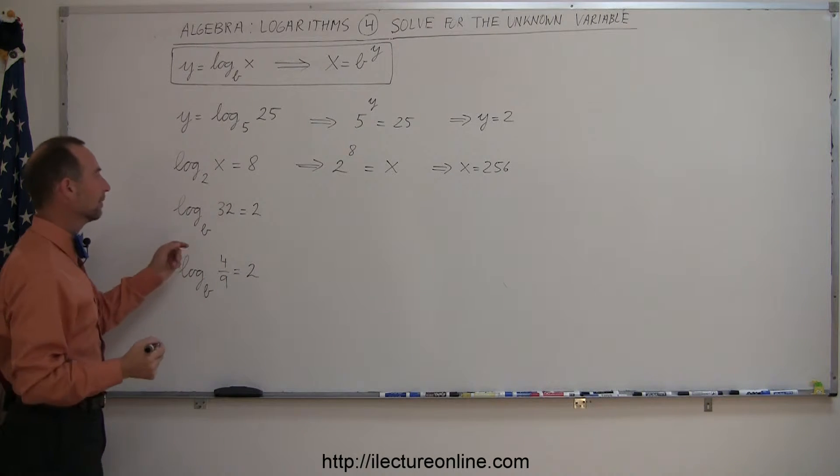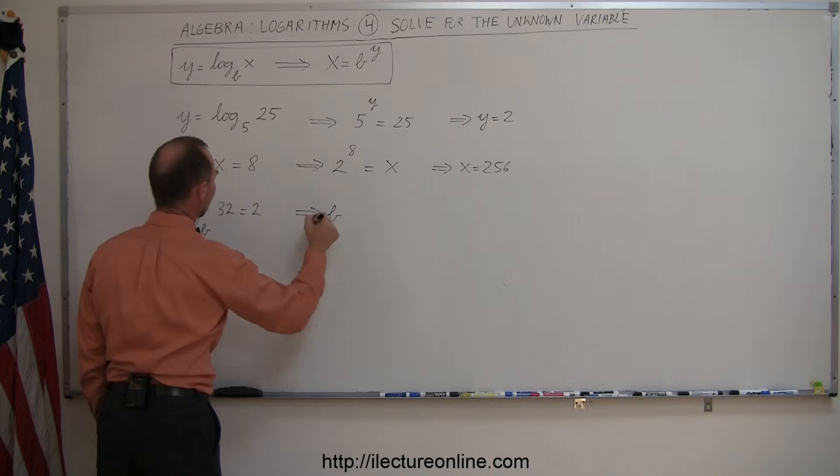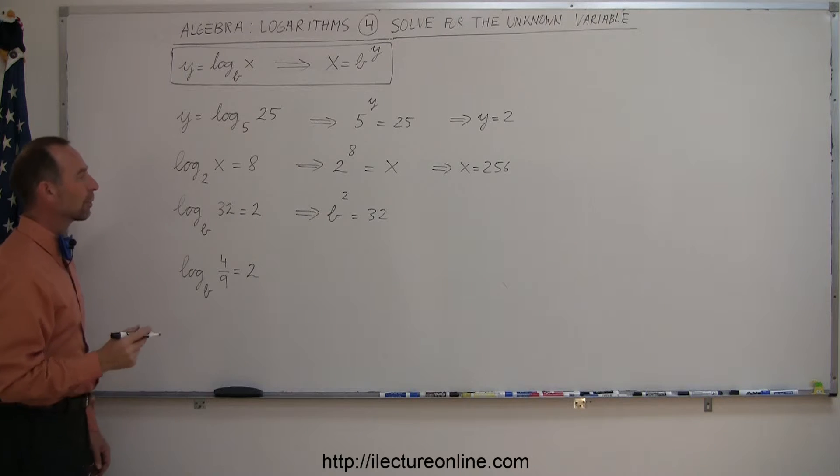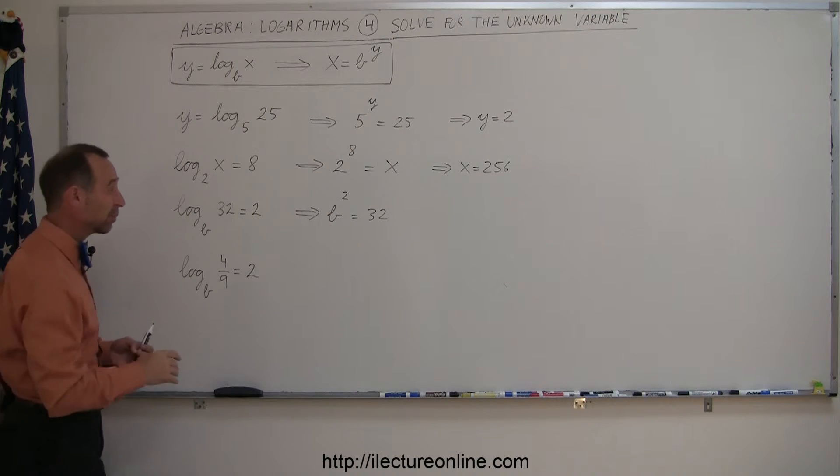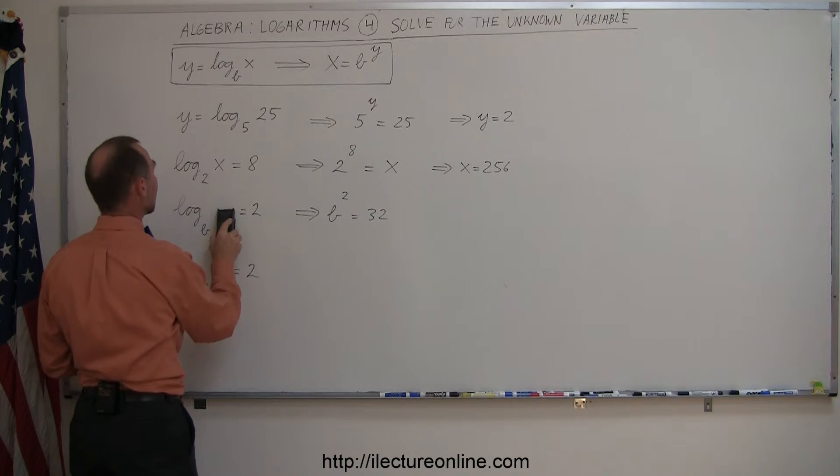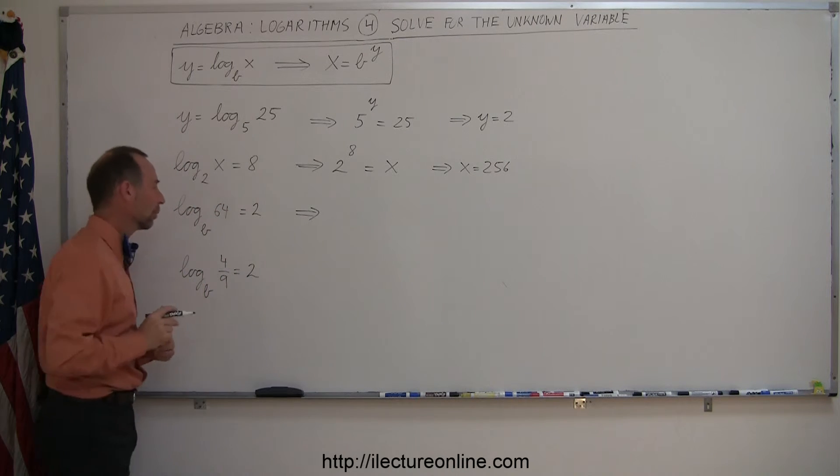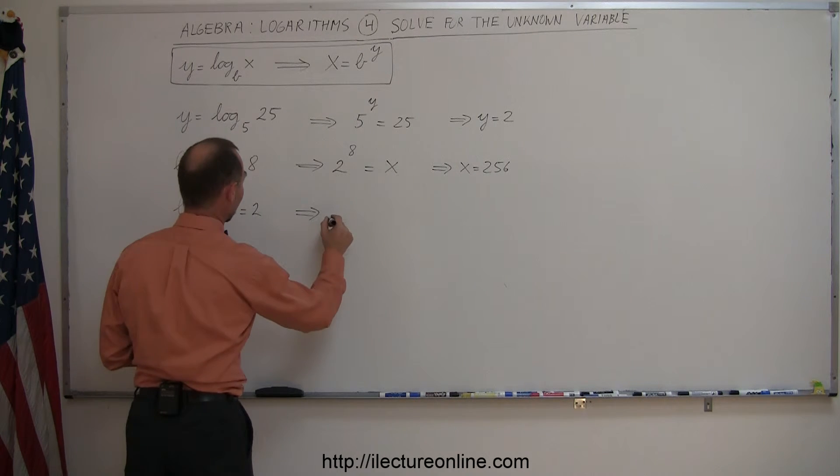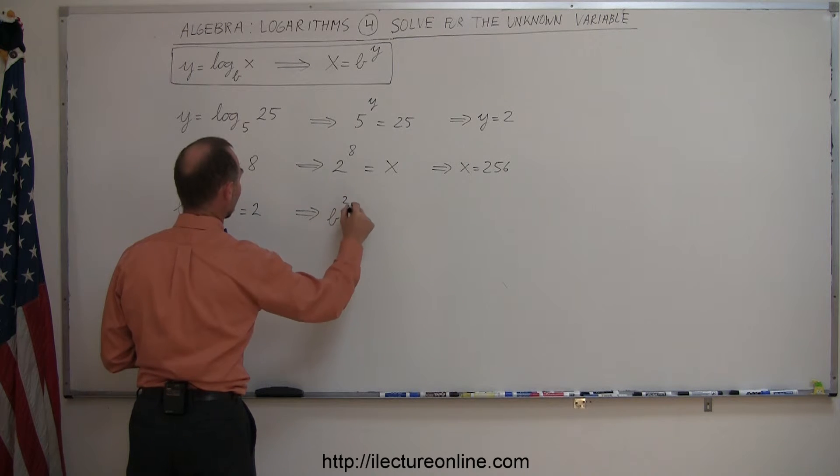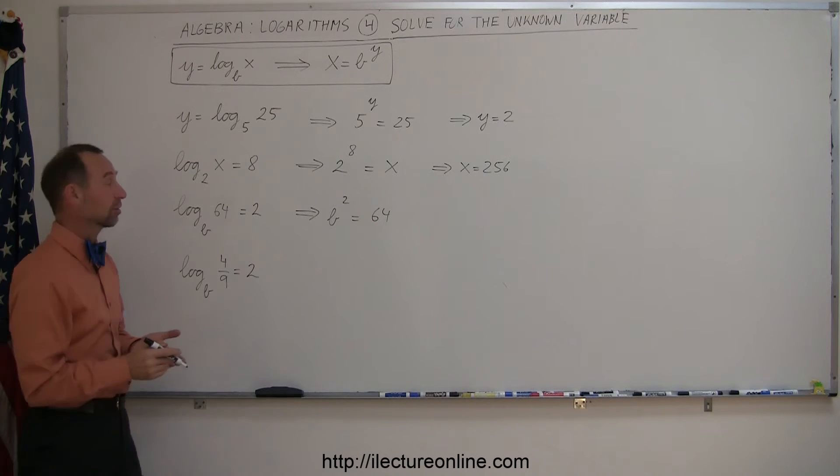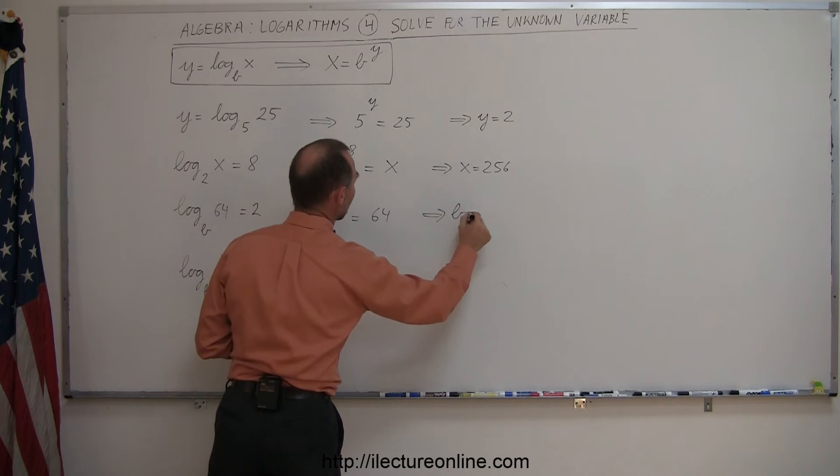All right, on the next one, we take the base, always start with the base, raise it to the exponent, 2, and we get 32. So what base to the second power gives us 32? I don't think I picked my numbers very well on this one because that would be a hard one to do without a calculator. So, let me change that problem. How about the log of 64 base b equals 2? And let's try that one. So we have the base b raised to the second power equals the number 64. And then you can see that yes, b will have to be 8 because 8 squared is 64. So the answer there is b equals 8.